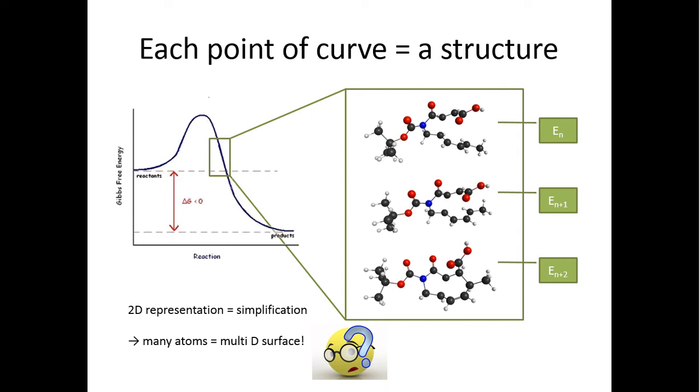What happens is at every point on this curve there is a structure corresponding to that energy and you can follow along and go from reactants to products by going step by step through all of these structures. So what I'm trying to get at is that the two-dimensional representation is a very crude simplification of what it actually looks like.